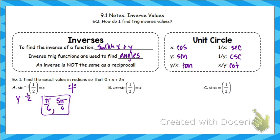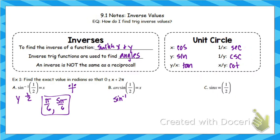If you look at part b, it is actually the exact same question — just new notation and a different way of writing it. Arc sine means sine inverse. I think maybe it's for formatting because you don't have to use a superscript. If you see 'arc', it means inverse. Now remember, it does not mean reciprocal — inverse and reciprocal are different. Inverse means find the angle; reciprocal refers to secant, cosecant, cotangent. So arc sine of 1/2 is the same question: pi over 6 and 5 pi over 6.